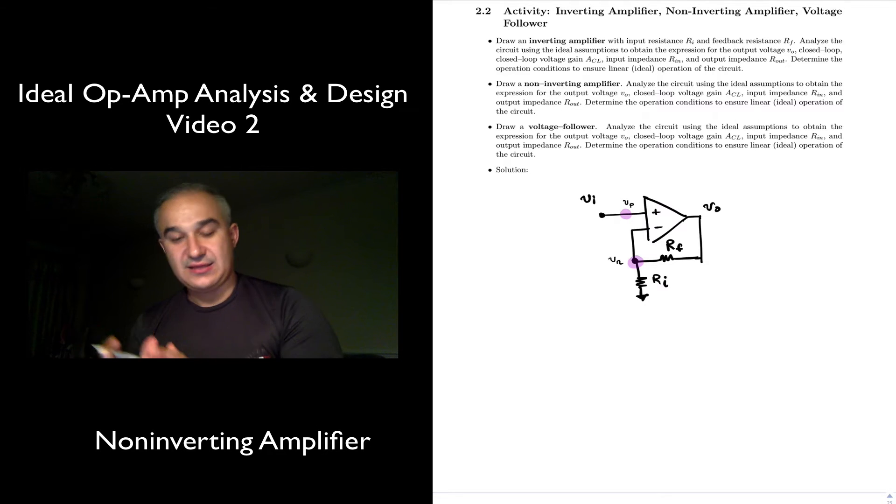So in this case, which one is more complex, this one or this one? Well, clearly the Vn is more complex. This is Vn and this is Vp. And we apply nodal analysis at that node,